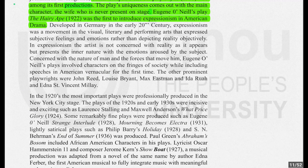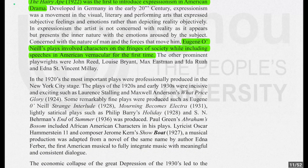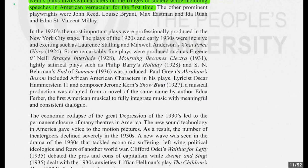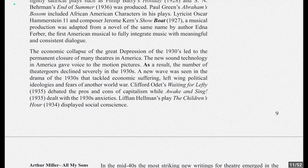Other prominent playwrights of the Provincetown era included John Reed, Louise Bryant, Max Eastman, and Edna St. Vincent Millay. In the 1920s, the most important plays were professionally produced on the New York City stage. The plays of the 1920s and early 1930s were incisive and exciting, such as Laurence Stallings and Maxwell Anderson's 'What Price Glory.' Some remarkably fine plays were produced, including Eugene O'Neill's 'Strange Interlude' and 'Mourning Becomes Electra.' The economic collapse of the Great Depression of the 1930s led to the permanent closure of many theatres in America.